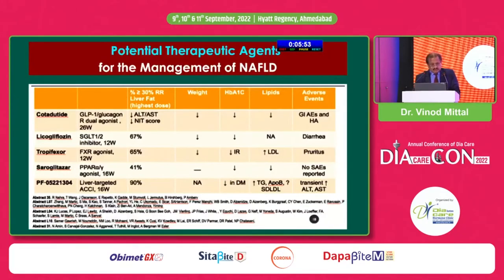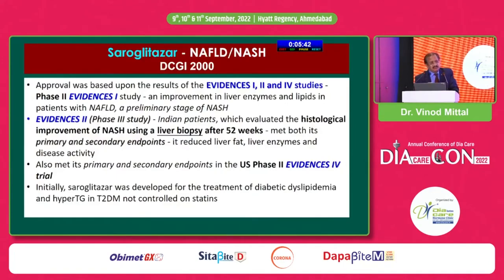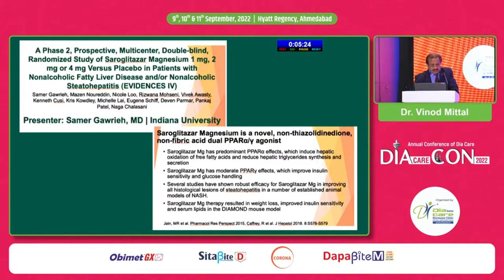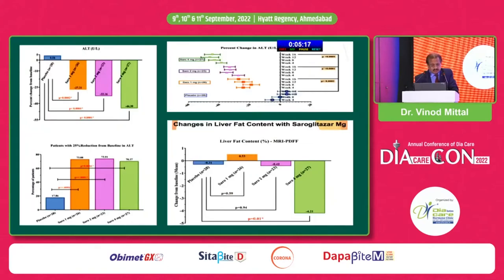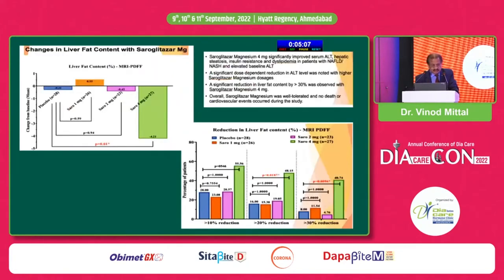Many studies are ongoing. Saroglitazar has already been approved by DCGI, although not yet by the FDA. The trials — named EVIDENCES 1, 2, 3, and 4 — have shown that saroglitazar reduces SGOT and SGPT, decreases hepatic ballooning, decreases lipid levels inside the liver, and there are even biopsy-proven studies. Overall, the fat content of the liver decreases by almost 30% with saroglitazar.